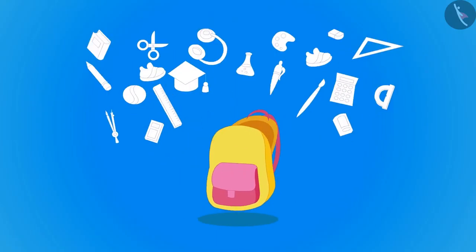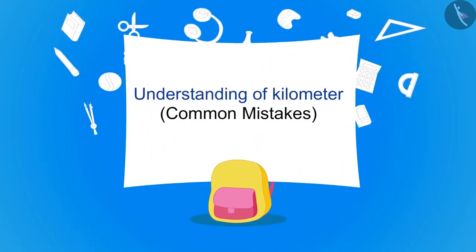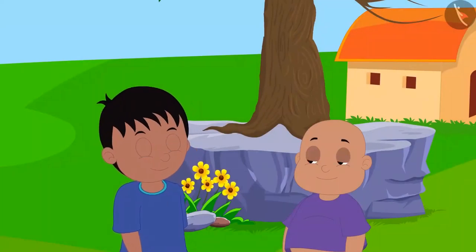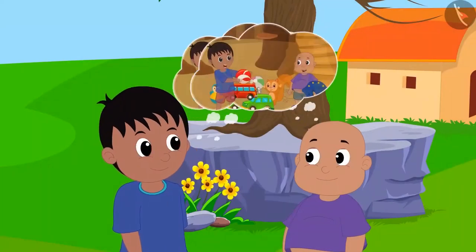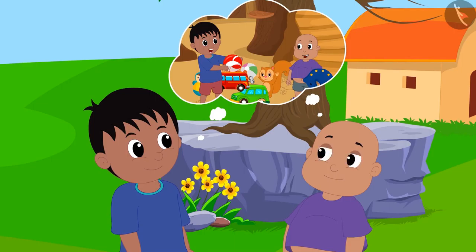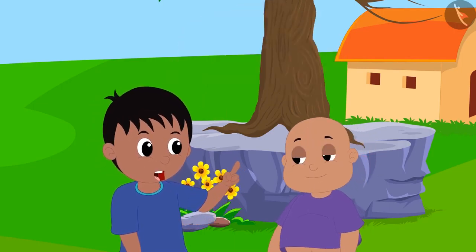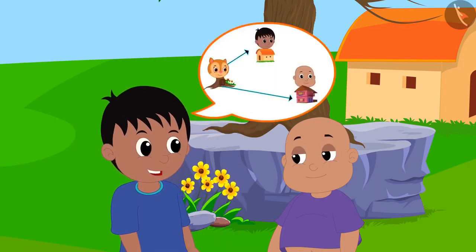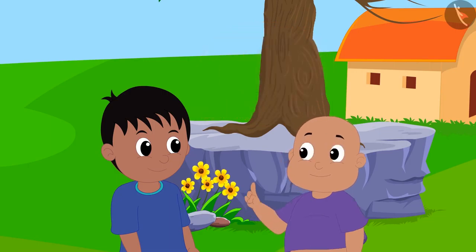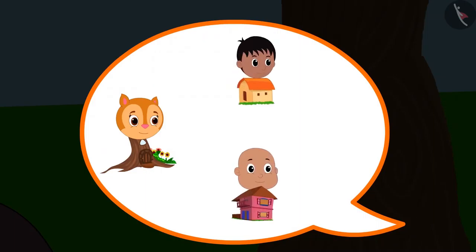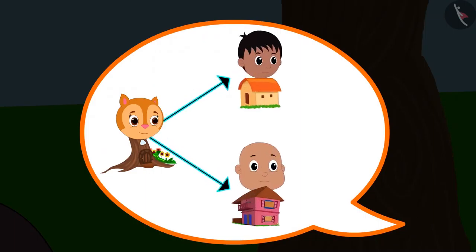In this video, we will see some common mistakes related to this. Raju and Bablu are going to play at Chanda's house. Raju tells Bablu that his house is closer to Chanda's house. But Bablu is arguing with Raju that their two houses are at equal distances from Chanda's house.